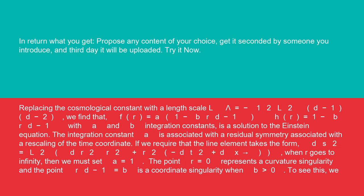The point r = 0 represents a curvature singularity and the point r^{d-1} = b is a coordinate singularity when b > 0. To see this,